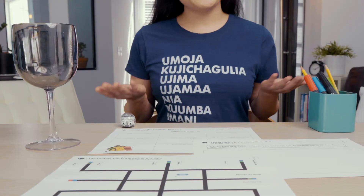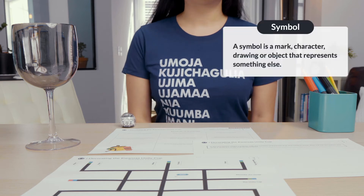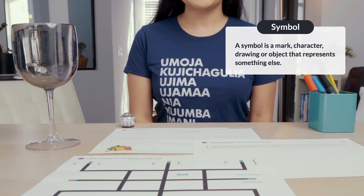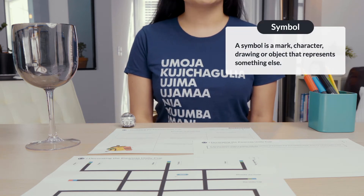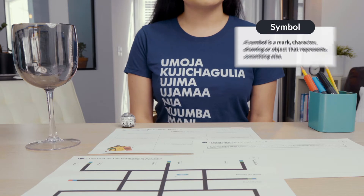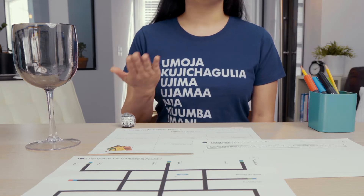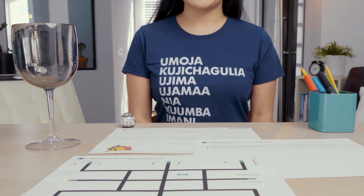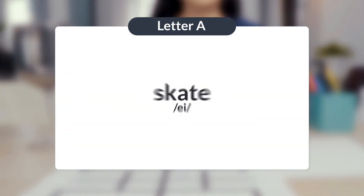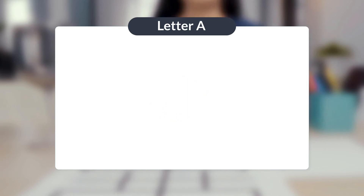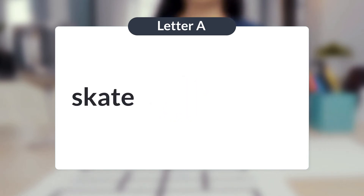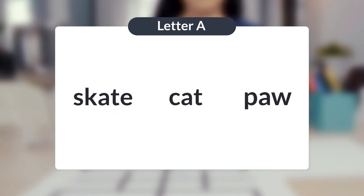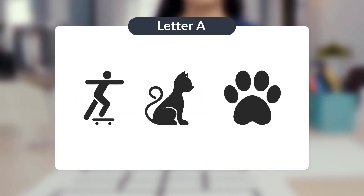First of all, what is a symbol? A symbol is a mark, character, drawing, or object that represents something else. For example, the letter A is a symbol. It represents the sound of 'a' as in skate and 'ah' as in cat, and also 'aw' as in paw. The words skate, cat, and paw are also symbols for objects.